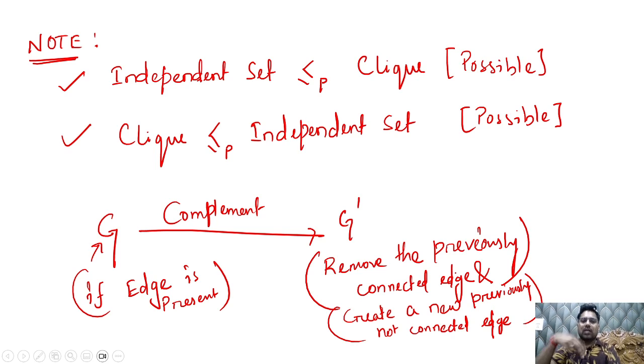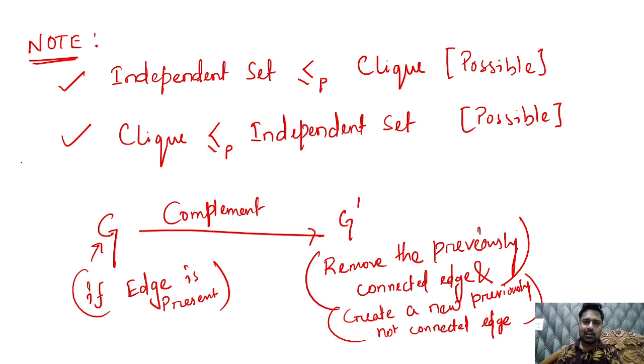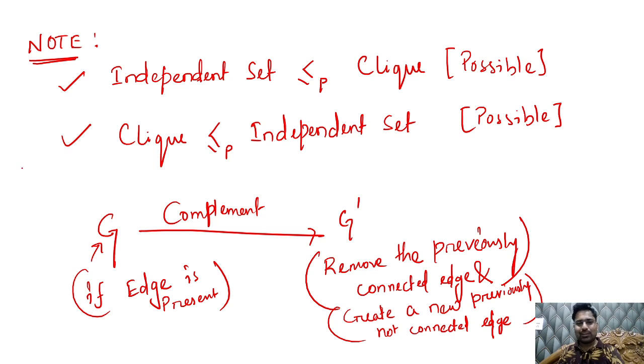What we are doing is taking the complement G to G': if an edge is present, in the complement we remove that previous edge and create new edges for all previously non-connected pairs. This is how we convert from independent set to clique or clique to independent set. I hope it is clearly understood — if you have any problems, please comment below. Thank you, have a good day.